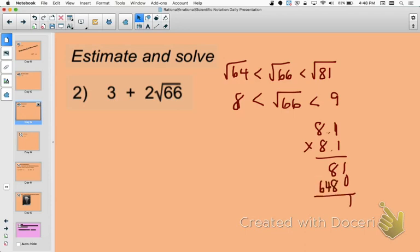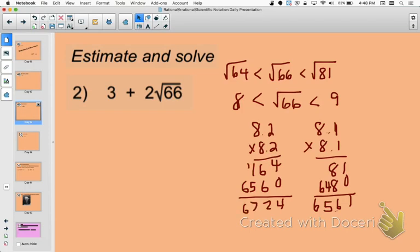And then add up my columns. I got 65.61, which is pretty close. I'm just going to double check 8.2. Which gives me 67.24, and that is just a little bit too far above. So this is going to be my closer estimate, 8.1.